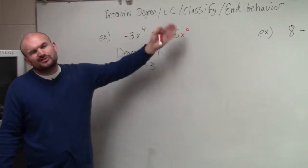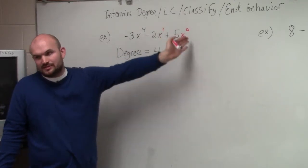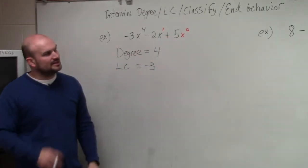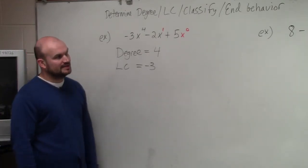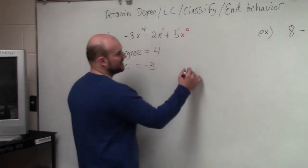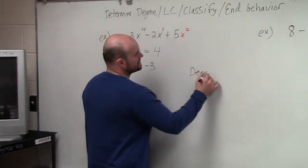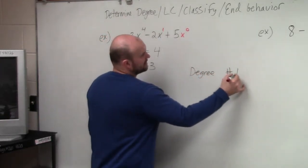So anytime you have a constant, you can understand that there's an x to the 0 there. And we'll get to that a little bit later in the chapter as well. So now we need to determine classification. So when we did this in class, I went over two different ways to classify.